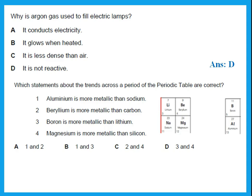Beryllium is more metallic than carbon. Where is beryllium and where is carbon? Yes, carbon actually is in group 4. So yes, beryllium would be more reactive, so 2 is correct. Boron is more metallic than lithium. Where is boron? No. Lithium would be more reactive. Magnesium is more metallic than silicon. Silicon is actually in group 4 and magnesium would be more metallic, so that is correct. So the statements that are correct are 2 and 4.